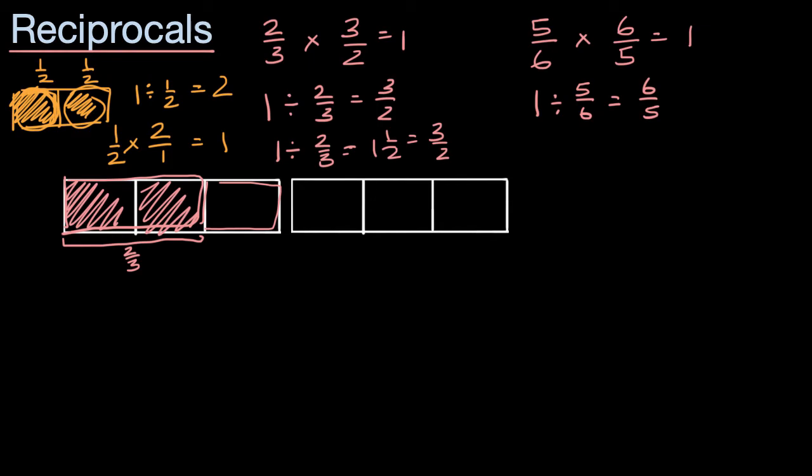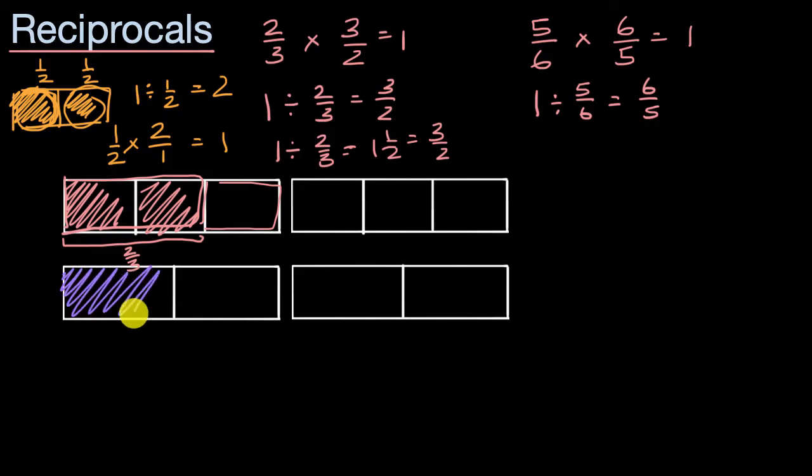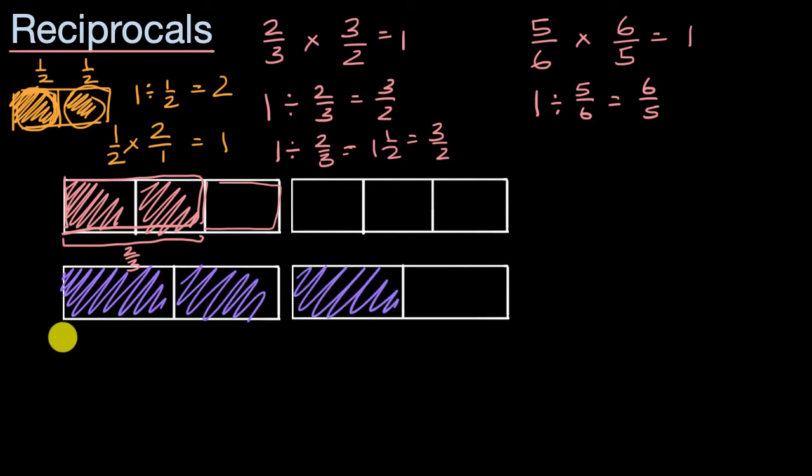Let's do another example. If we were to think about 3/2. So 3/2 would be, let's see, that's a half, that's 2 halves, and then this is 3 halves right over here. So let me mark all of that. So this whole thing right over here is 3/2.